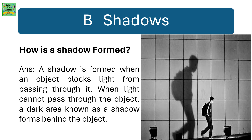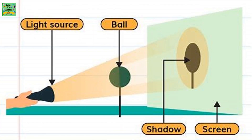The second part is shadows. How is a shadow formed? A shadow is formed when an object blocks light from passing through it. When light cannot pass through the object, a dark area known as a shadow forms behind the object. With a light source, ball, shadow, and a screen — when a light source shines on a ball, a shadow of the ball is formed on the screen.